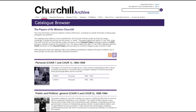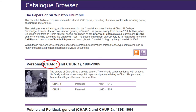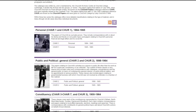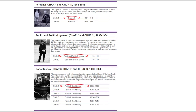The papers are divided into two series. The papers dating from before July 1945, when Churchill's first term as Prime Minister ended, have the reference CHAR, and the papers dating after this have the reference CHUR. Within these two series, the catalogue offers more detailed classifications relating to the function which Churchill was performing when he created or received a particular document.